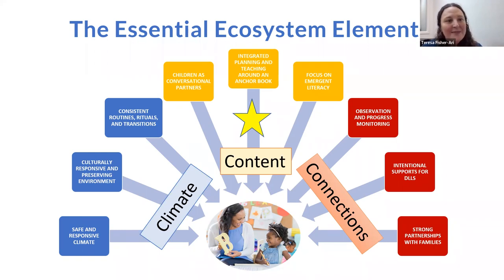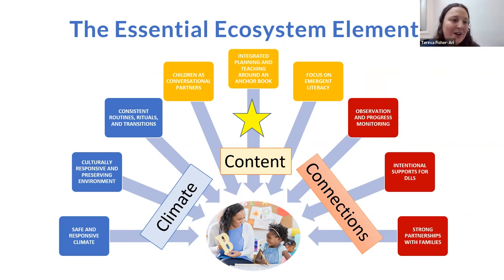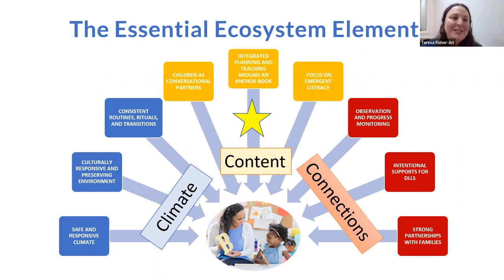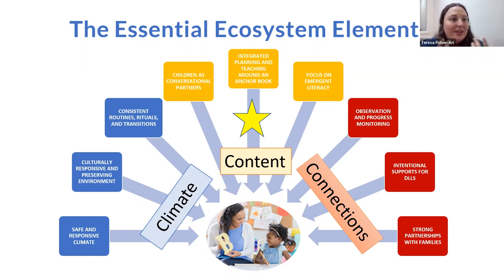At Cox, we root our work within nine essential elements that we think about deeply as we try to make sure we're creating those ecosystems where children thrive in all the spaces where they develop. The first three are about how we create a climate where children are fostered, supported, and safe — where there is culturally responsive and sustaining opportunity for them to grow, and where routines and rituals help them feel seen, safe, brave, and engaged in the courageous work of learning and growing. You see the star on the central element we're really centering on together today.